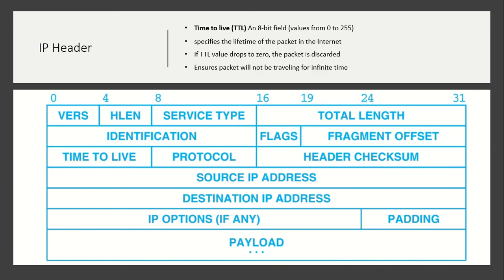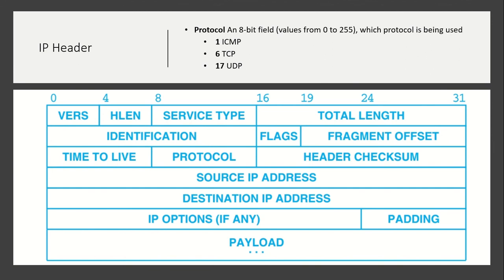Then fragment offset is a 13-bit field indicating the position of this fragment in the original packet. Time to live (TTL) specifies how many hops the packet can visit; it decreases at every hop. Then the protocol field is an 8-bit field — it can indicate ICMP, TCP, UDP, etc., with a corresponding protocol number placed in this field.